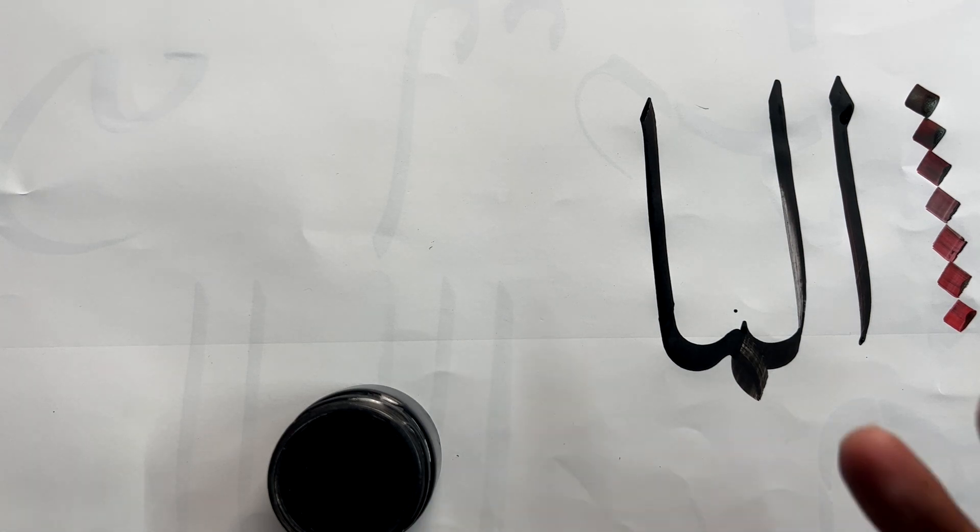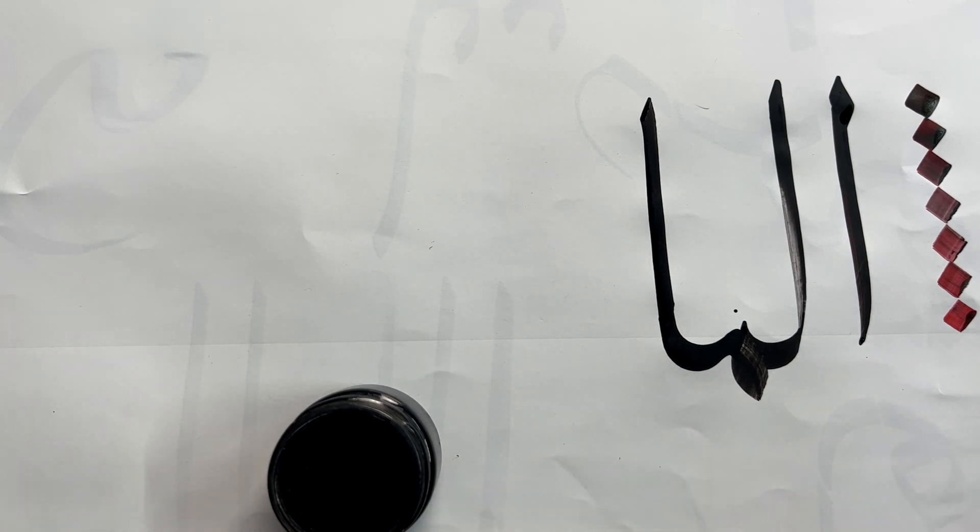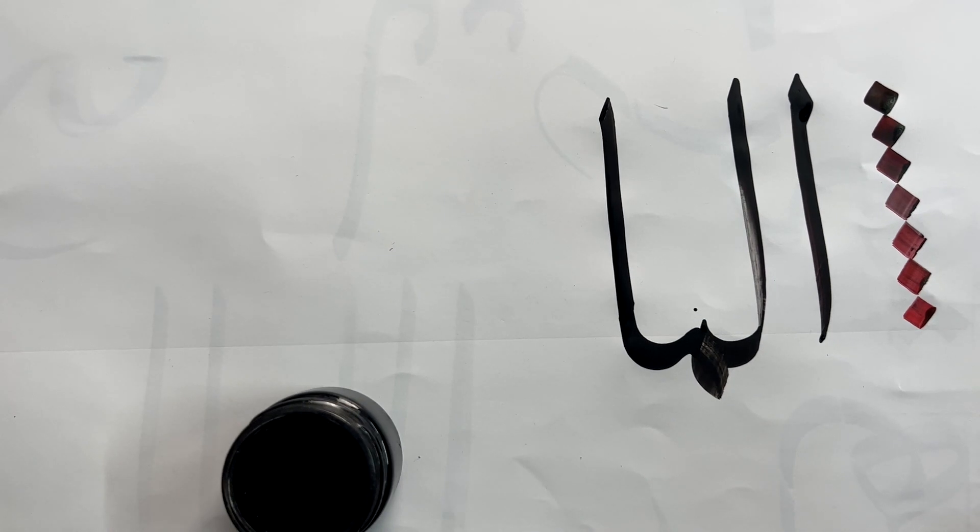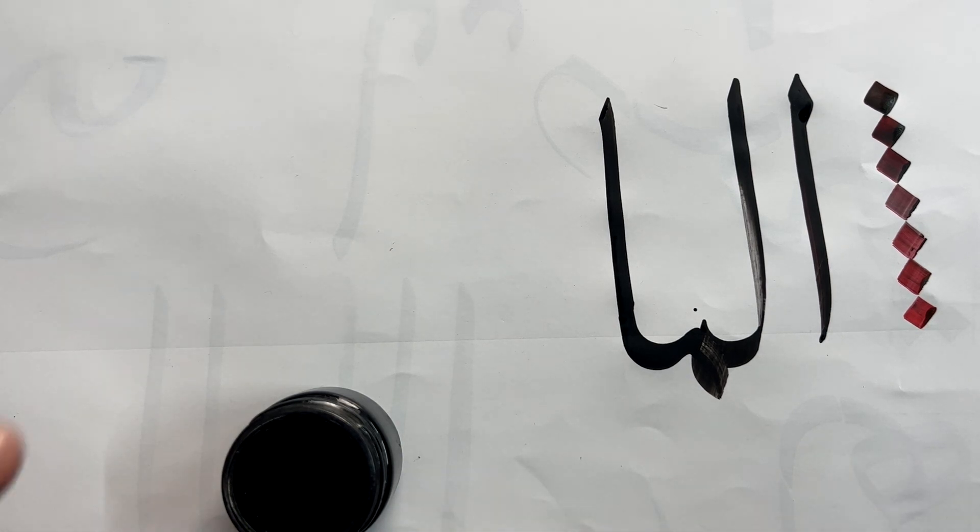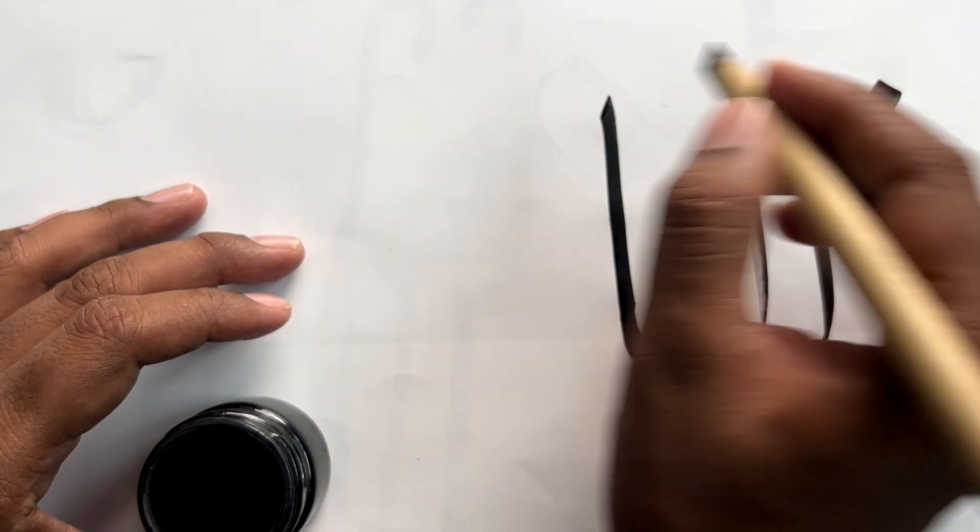Now alif is in the end form. You will see me or you'll hear me using these words a lot: middle form, end form, initial form. These are all the terms which are explained in the connecting course. Again, that is linked below under the name 'advanced.' The entire playlist is in fact advanced. So now I'll make lam.